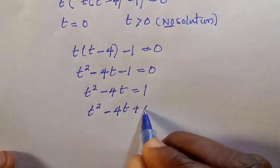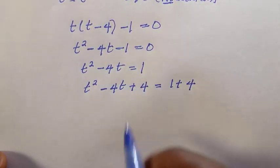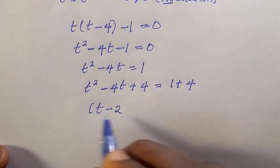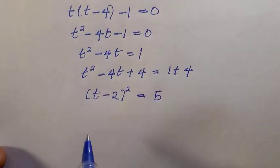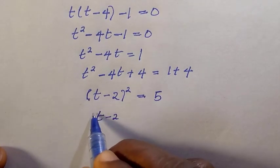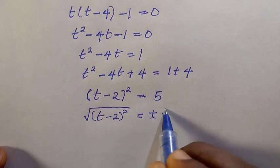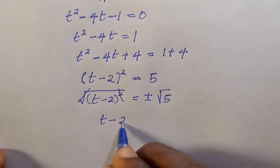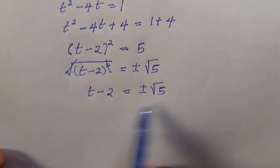Adding four to both sides gives t squared minus four t plus four equals one plus four equals five. The left side, t squared minus four t plus four, is just t minus two raised to the power of two, which equals five. Taking the square root of both sides eliminates the square: t minus two equals plus or minus root five.